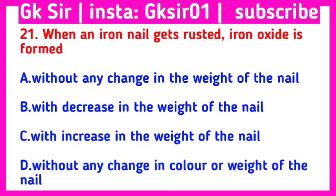Question number 21. When an iron nail gets rusted, iron oxide is formed — Option A: without any change in the weight of the nail, Option B: with decrease in the weight of the nail, Option C: with increase in the weight of the nail, Option D: without any change in color or weight of the nail.